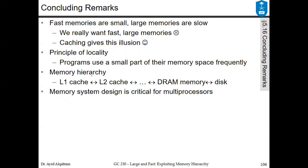The memory hierarchy includes the core or CPU, with registers as part of the processor, followed by L1 cache — usually split into data and instruction — then L2 cache, going lower and lower until you reach main memory or DRAM. Main memory can be used as a cache for the hard disk, and this is the idea of virtual memory. The memory system design is very critical for multiprocessors.